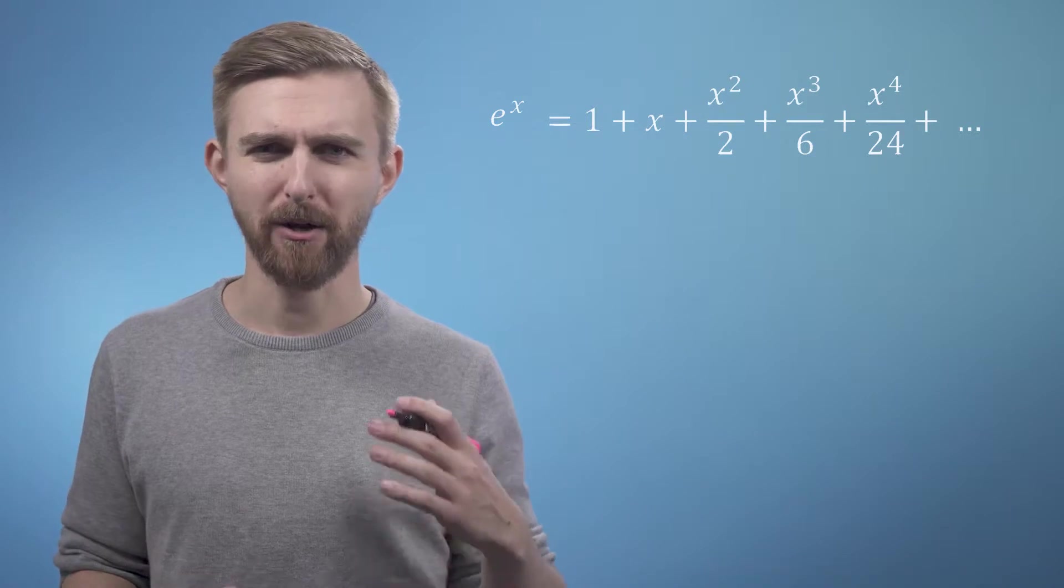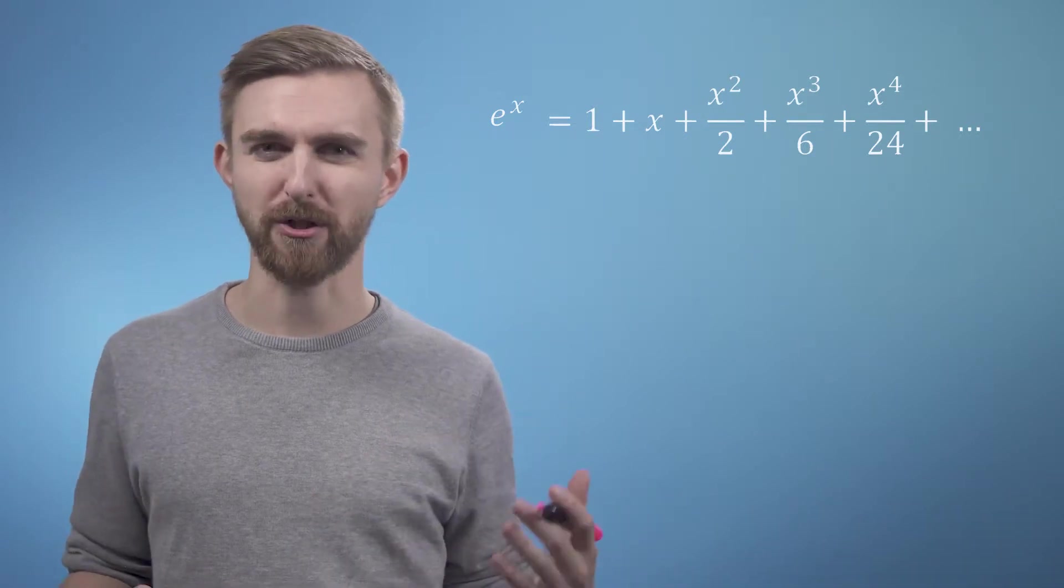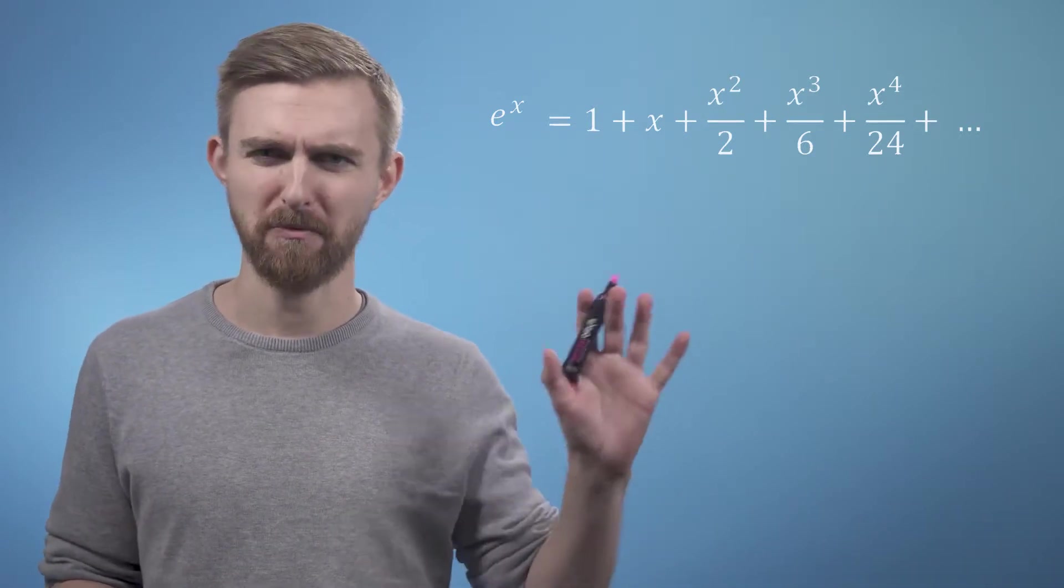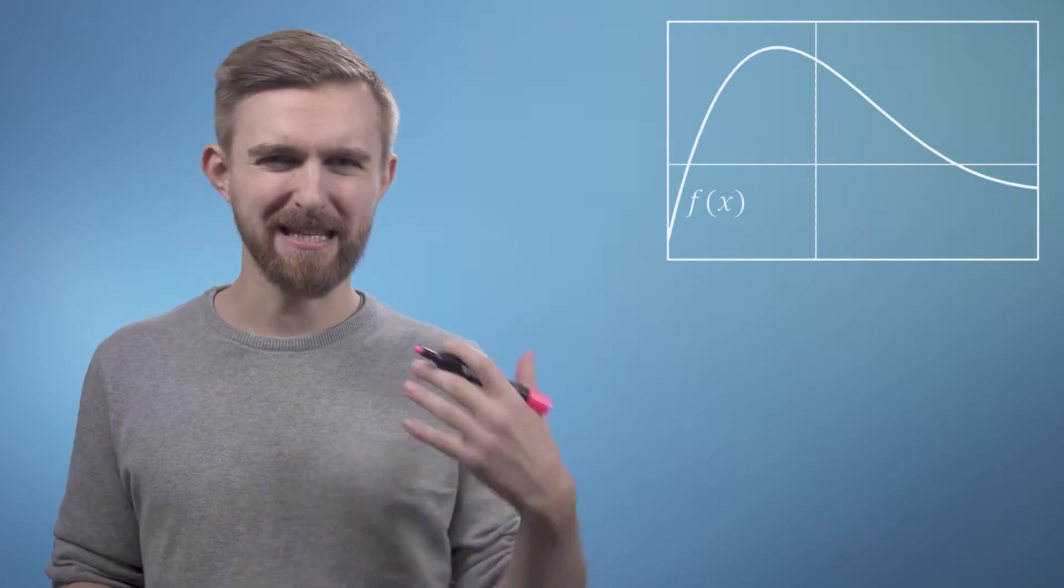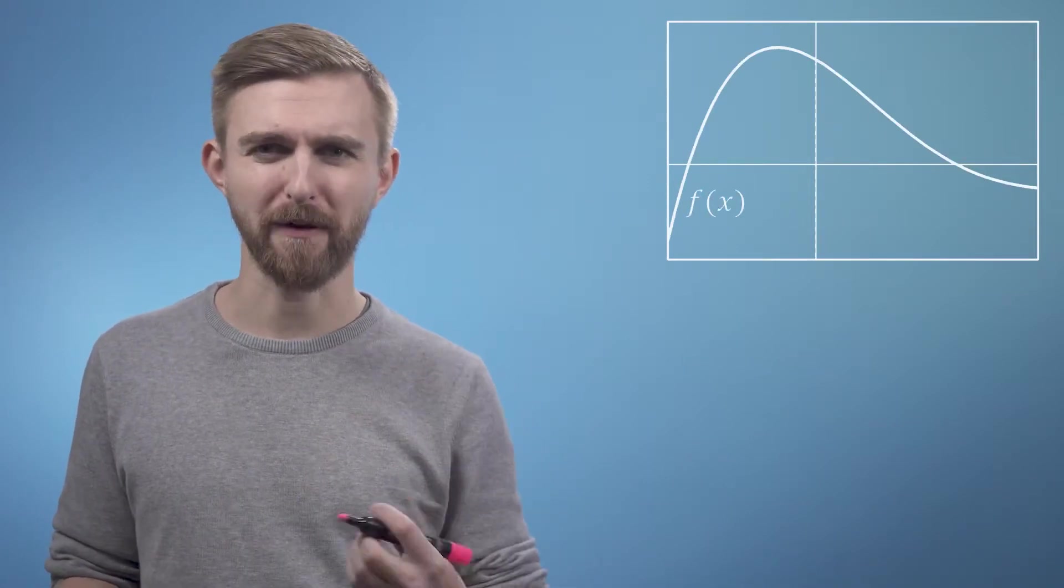So now we're going to try and explain this concept graphically by looking at a graph of some arbitrary function f of x, which looks like this, and building a sequence of gradually improving approximations.